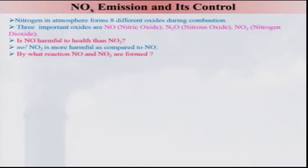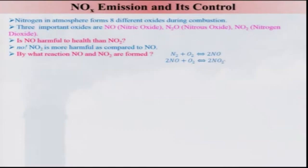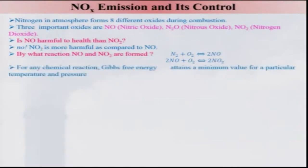By what reaction is NO2 formed? N2 reacts with the oxygen available in air, leading to 2 moles of NO. That occurs at high temperature, and 2 moles of NO can then react with oxygen to form 2 NO2 — nitrogen dioxide. For any chemical reaction, the Gibbs free energy attains a minimum value at a particular temperature and pressure, as we have already dealt with at length.